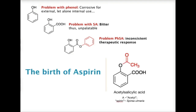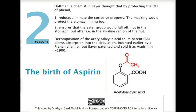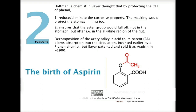So people thought: why not remove the phenol group, keep the carboxyl acid, and just change the OH group to an acetyl group? This thinking was done by many scientists, but the key scientist was Hoffman, a chemist at Bayer, who thought that masking the OH group could eliminate the corrosiveness. He also ensured that once in the stomach, the acetyl group would fall off and reform the parent molecule — salicylic acid. This gave birth to acetylsalicylic acid.